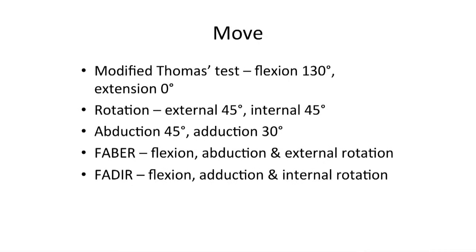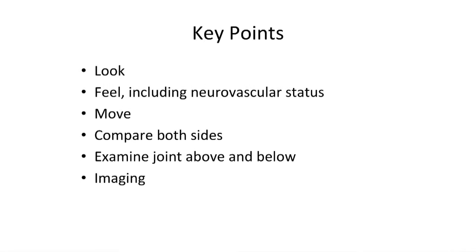This slide summarises the normal range of movement at the hip joint and special tests which may be performed. The key points to remember when examining the hip are to first look at the joint with the patient standing, walking and lying down. Examine the neurovascular status of both limbs and feel over the greater trochanter. Determine the range of movement at the joint, always compare one side with the other, and watch the patient's face to avoid causing further pain. To complete examination of the hip, the lumbar spine and knee should also be examined. If pathology is detected, appropriate imaging should be requested.